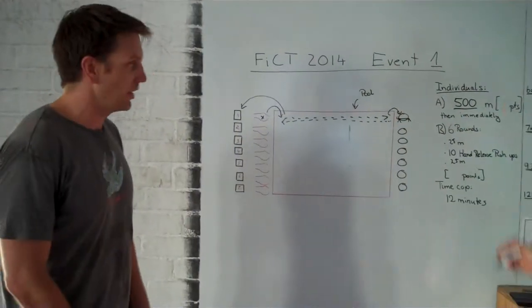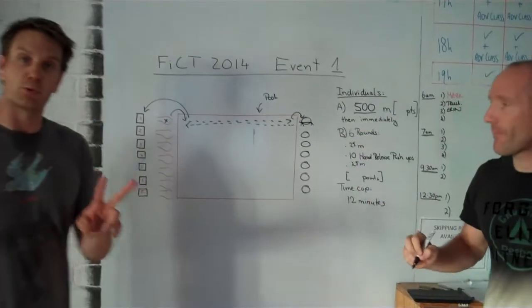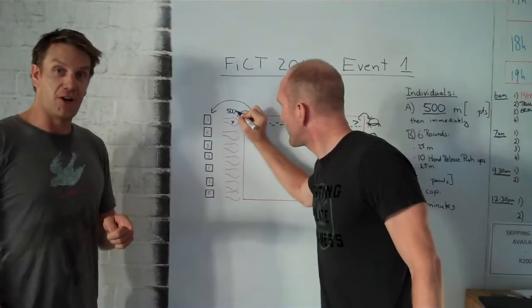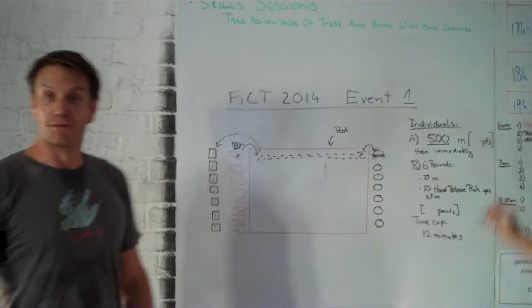There are two scoring opportunities for this workout. The first scoring opportunity will be on the row. So row hard. This is worth 50 points.